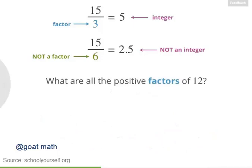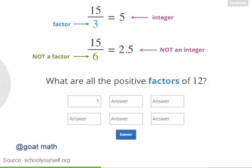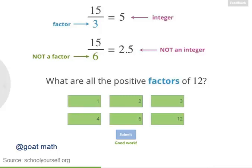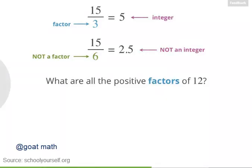Next, try listing all the positive factors of 12. There are 6 factors, so make sure you find them all. Excellent! One way to find the factors is by looking for pairs that multiply to 12. So that's 1 and 12, 2 and 6, and 3 and 4.